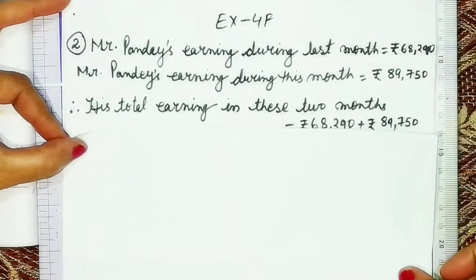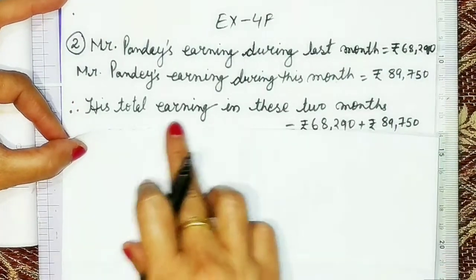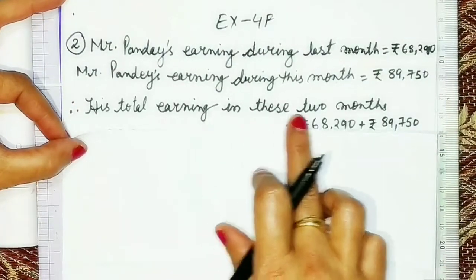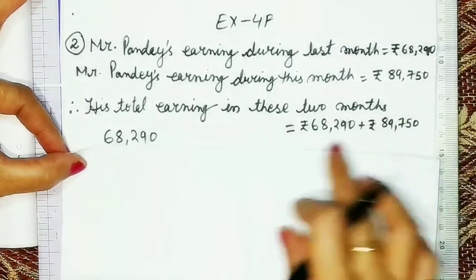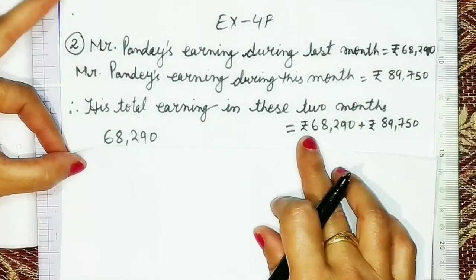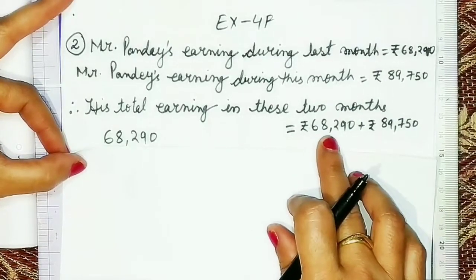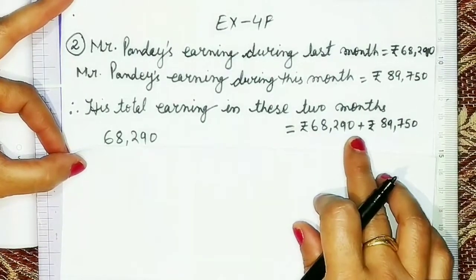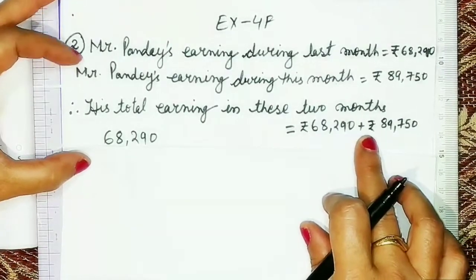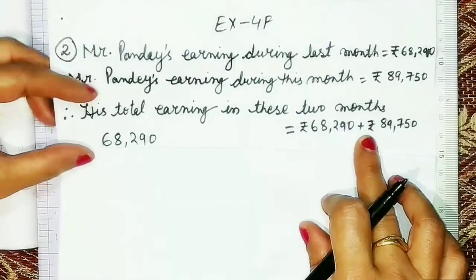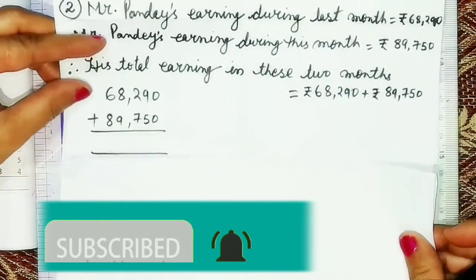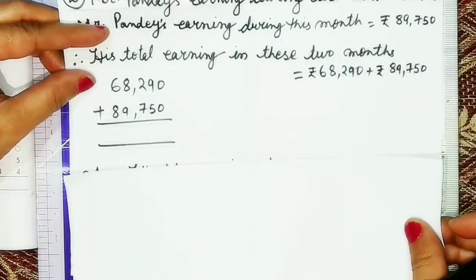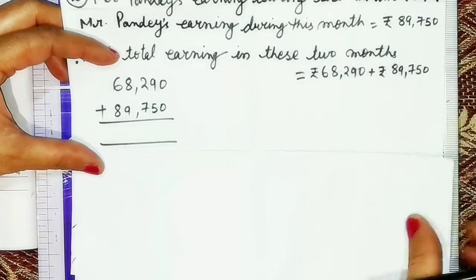Therefore, his total earning in these two months is equal to Rs. 68,290 plus Rs. 89,750. So now we will add both of them.